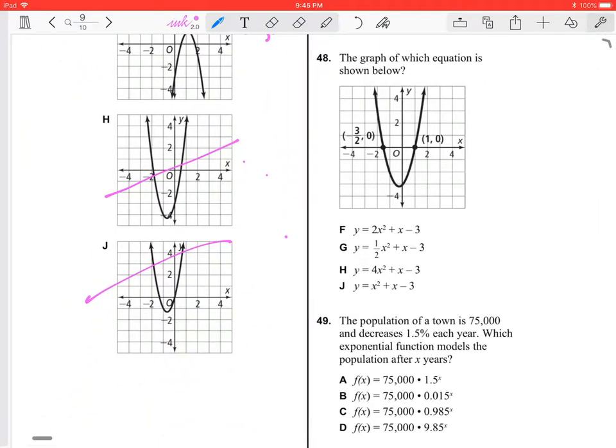Number 48: the graph of which equation is shown below? Alright. All of these are in quadratic form. I'm trying to think of the easiest way to solve this one. Okay, so we have two points, our zeros.